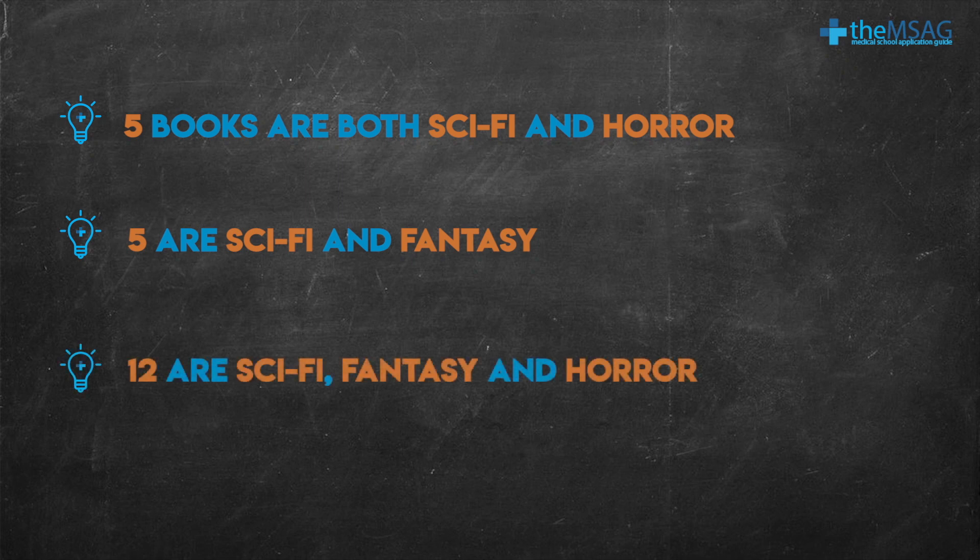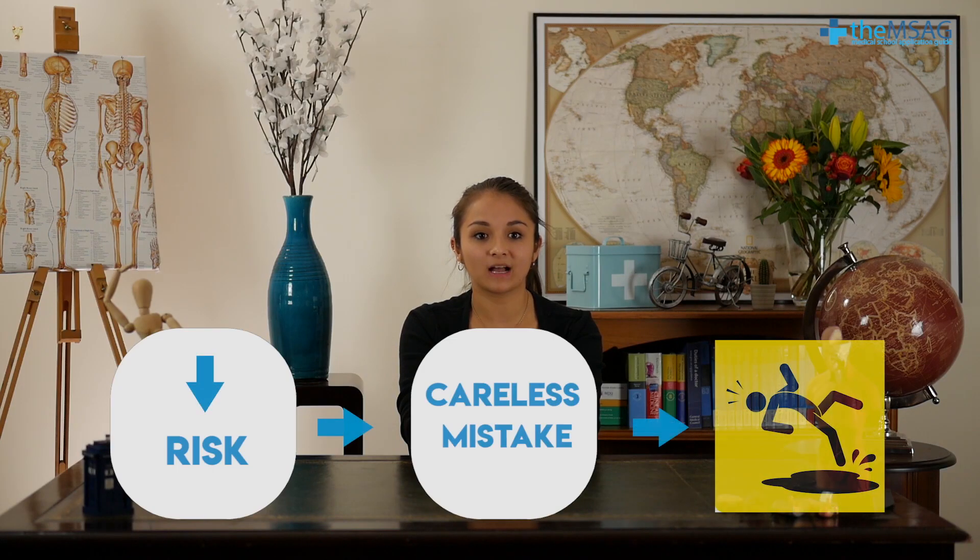I advise taking a moment to look at this area and separate the overlapping values accordingly in your mind. So for example, five books are both sci-fi and horror, five are sci-fi and fantasy, and twelve are sci-fi, fantasy, and horror. This reduces the risk of making a careless mistake and falling into the trap.